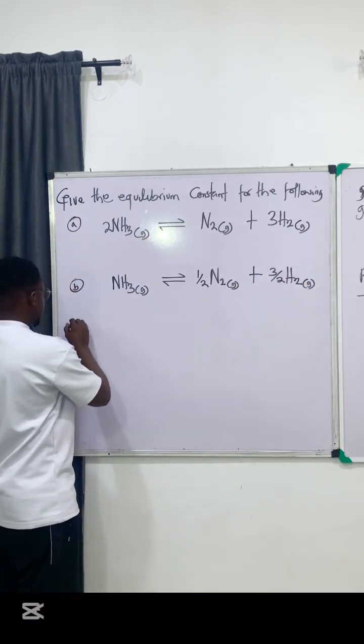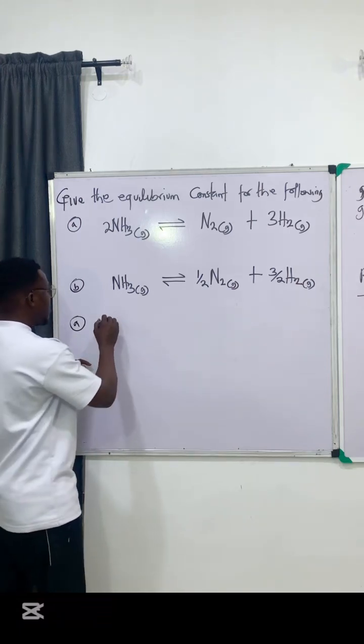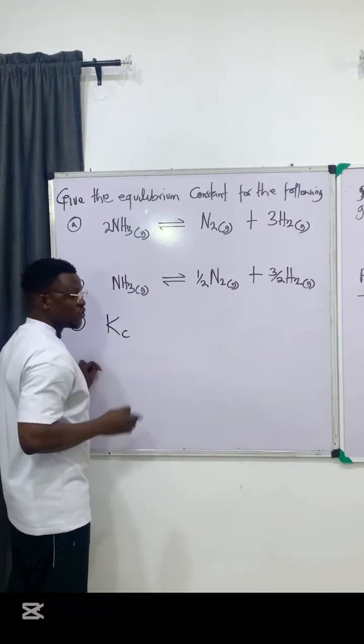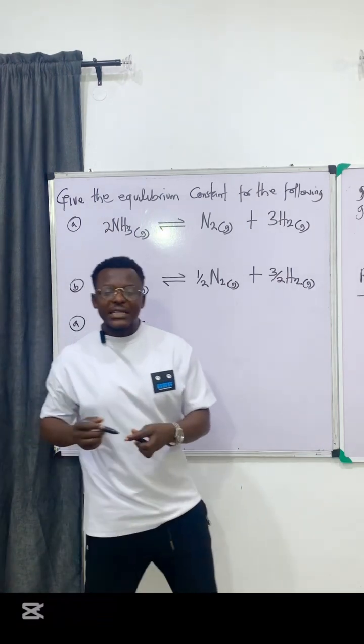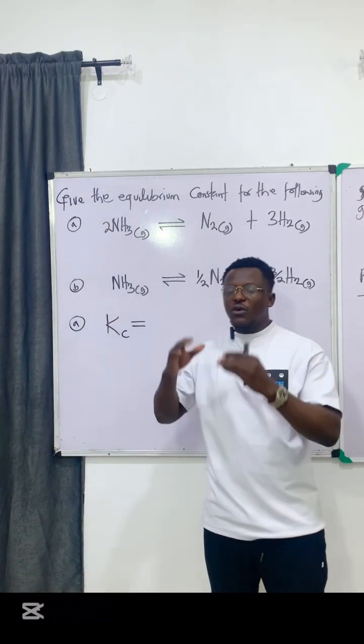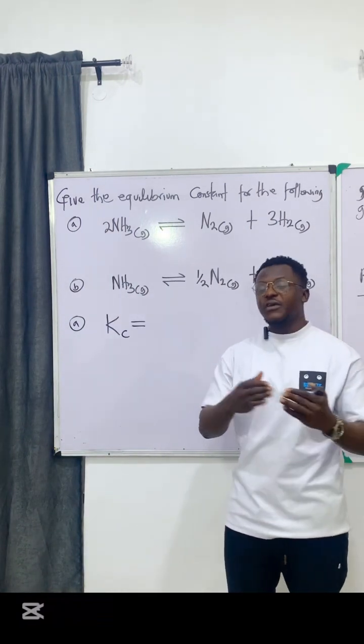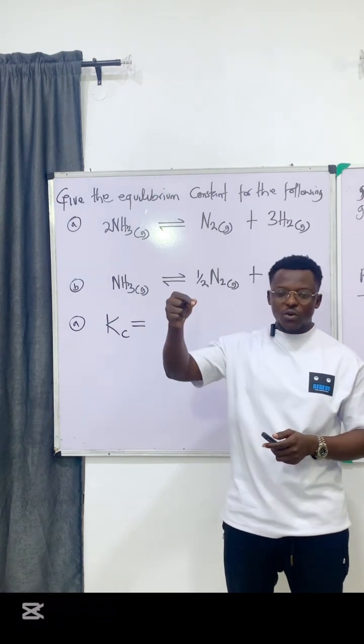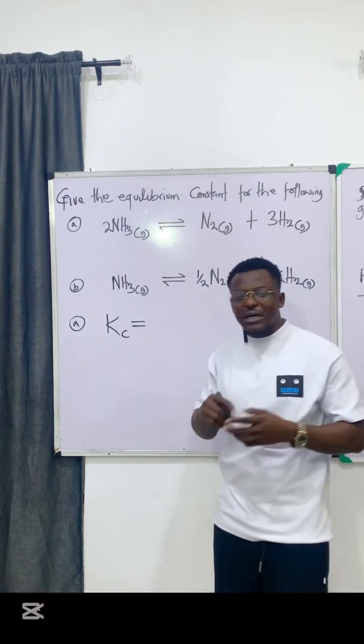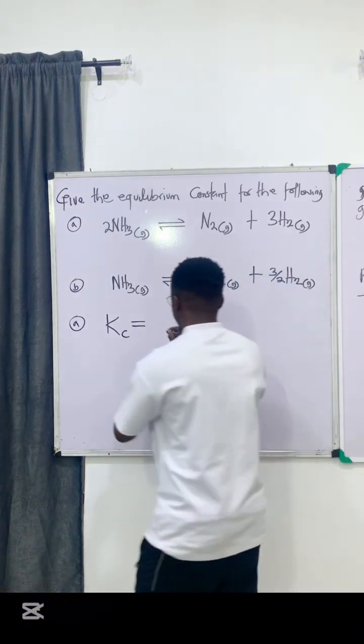For the first one, I will say A, equilibrium constant in terms of concentration is Kc. Now, equilibrium constant is the ratio of the concentration of the product to that of the reactant, each raised to their coefficient. Ratio can actually be said to be a fraction. So, I'll come here.